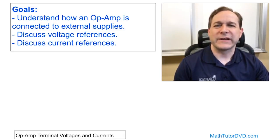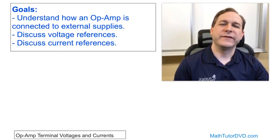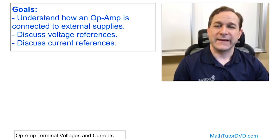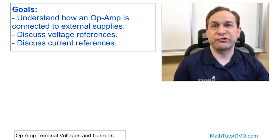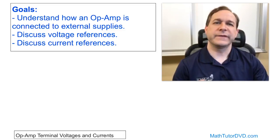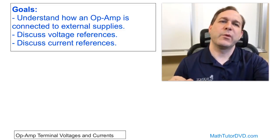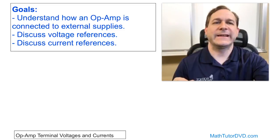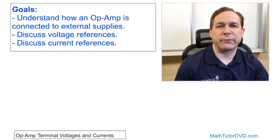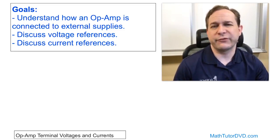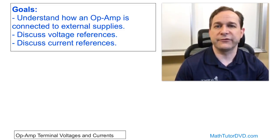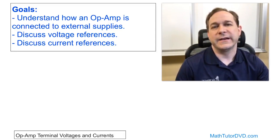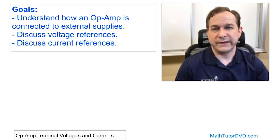Welcome to this lesson on engineering circuit analysis. We're going to discuss the op amp terminals and terminal voltages and currents, which is extremely important. The goal for this lesson is to understand how an op amp is connected to external power supplies — V plus and V minus — so you're not struggling with that as we start to learn other things and design our circuits.